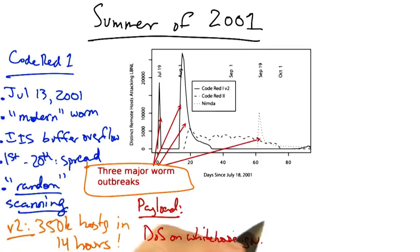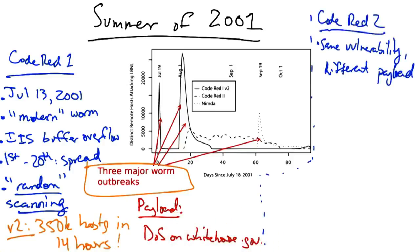A better worm design would have been much more catastrophic. Code Red 2 exploited the same vulnerability but had a completely different payload. It was released on August 4th, 2001 and was called Code Red 2 mainly because of a comment in the code.